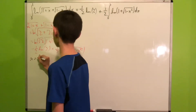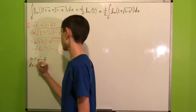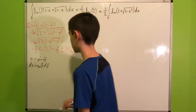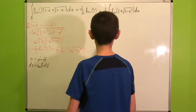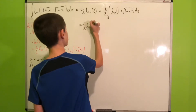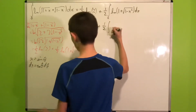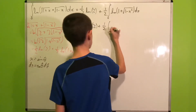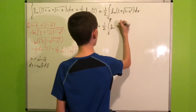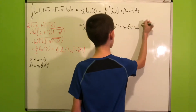Now we'll introduce a trigonometric substitution, namely we'll let x be the sine of theta, which means dx will be cosine theta d theta. We can now plug everything in, so we get 1 half natural log of 2 plus 1 half integral from 0 to pi over 2 of natural log of 1 plus cosine of theta times cosine of theta d theta.